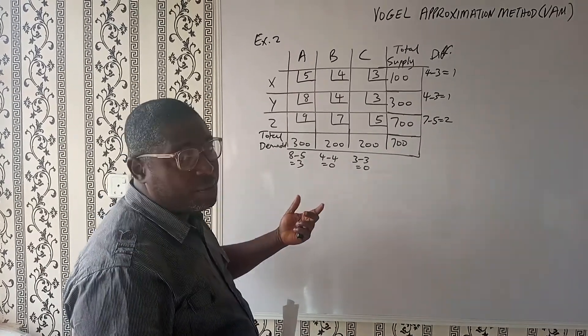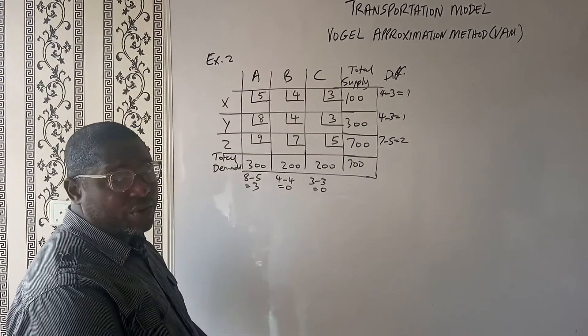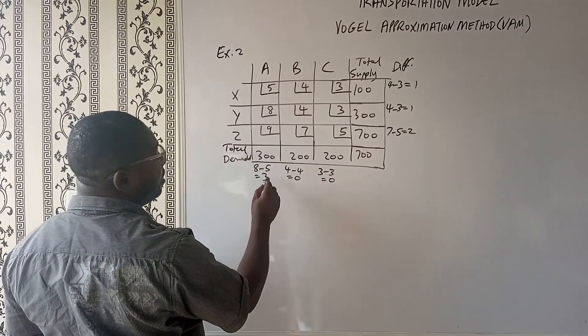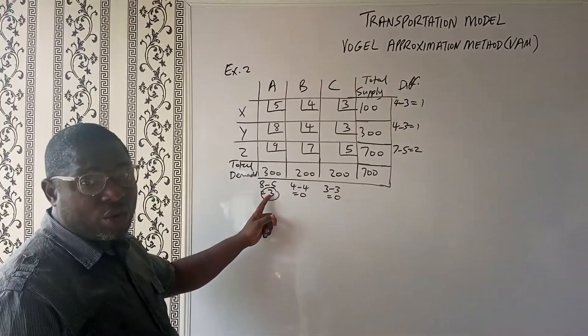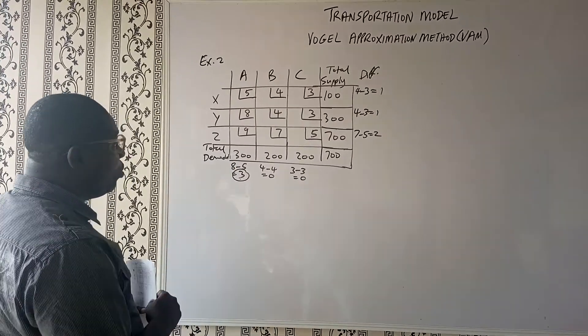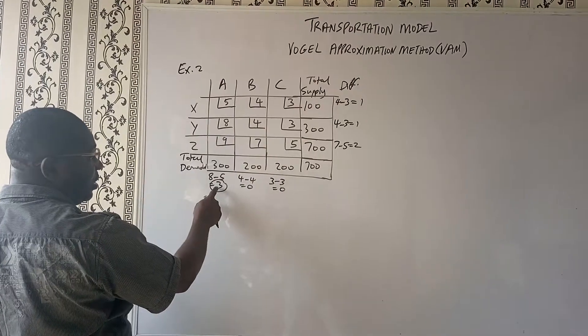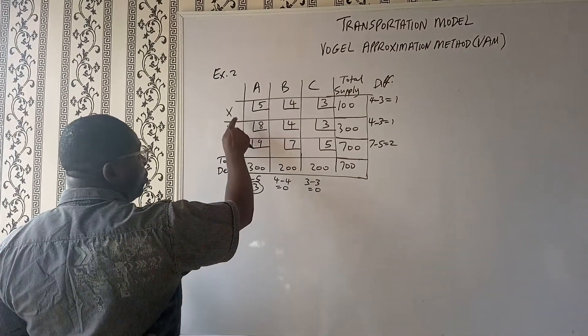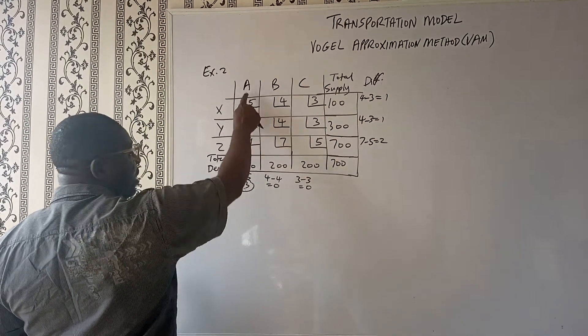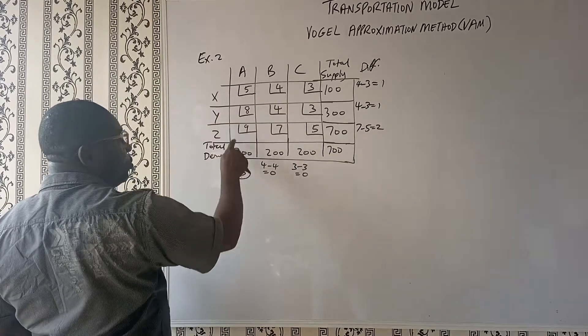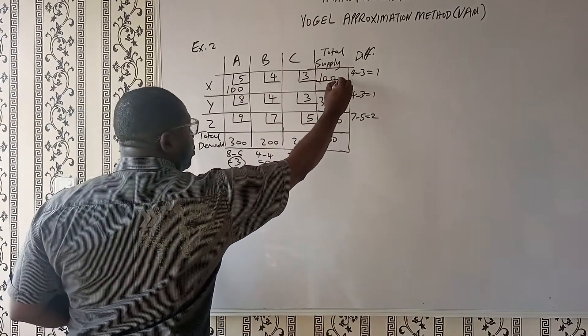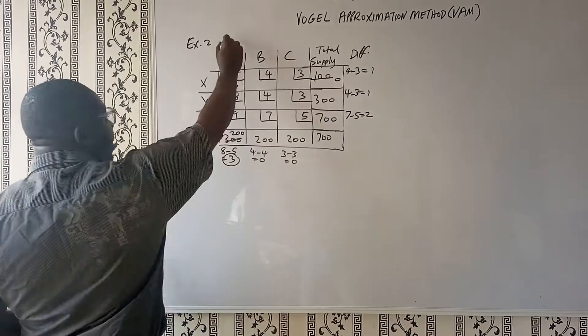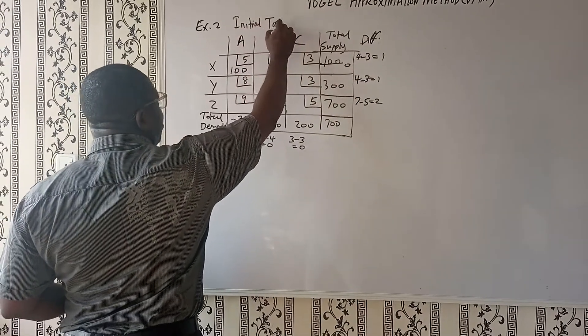So from this, what is the highest of the difference that we have? We have 1, 1, 2, we have 3, 0, 0. So this is the highest of the cost. So this becomes the focal column. What we now do is look at this and identify the least cost here. The least cost here is 5. And we now proportion volume into this cell. We have supply of 100 from X and we have demand of 300 from A. So we fill in the 100 here. This goes off. We have fully taken all the supplies and are left with 200 here. So this is our initial tableau.